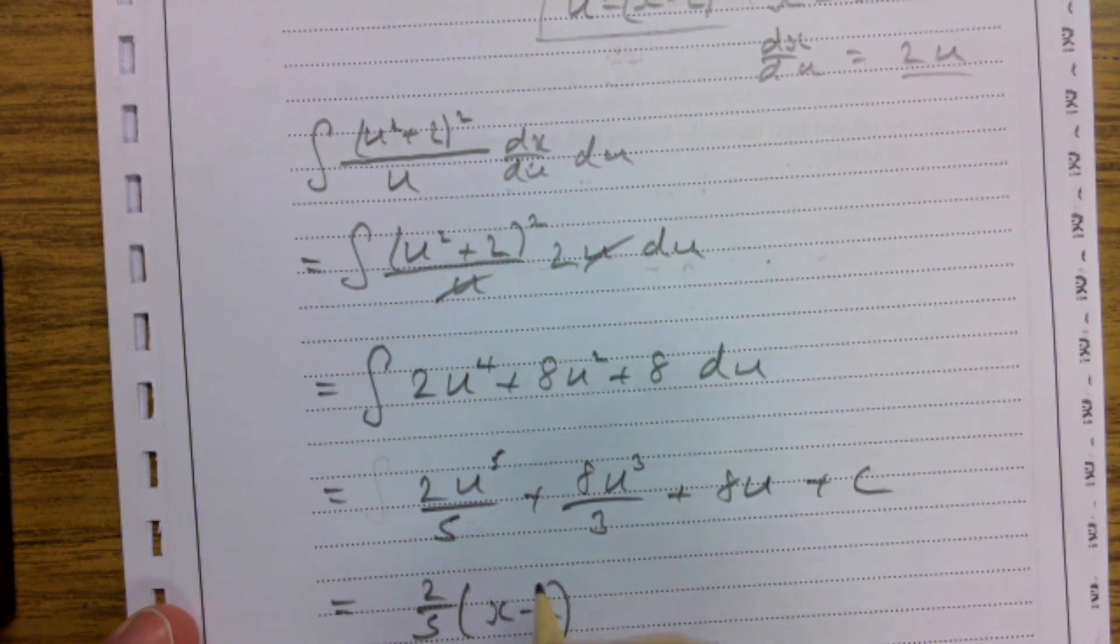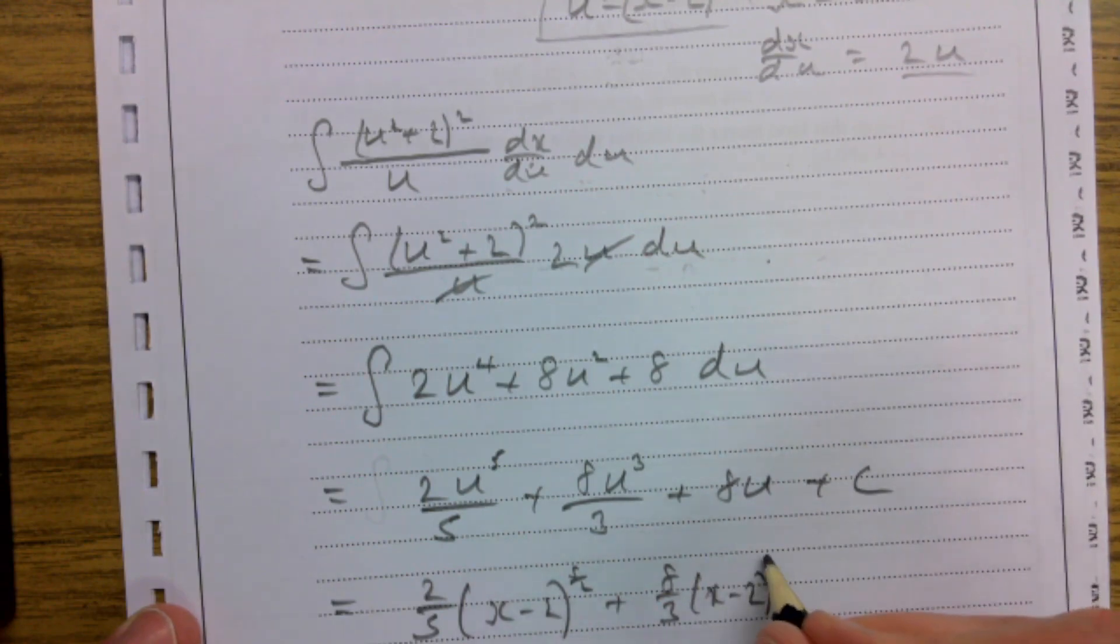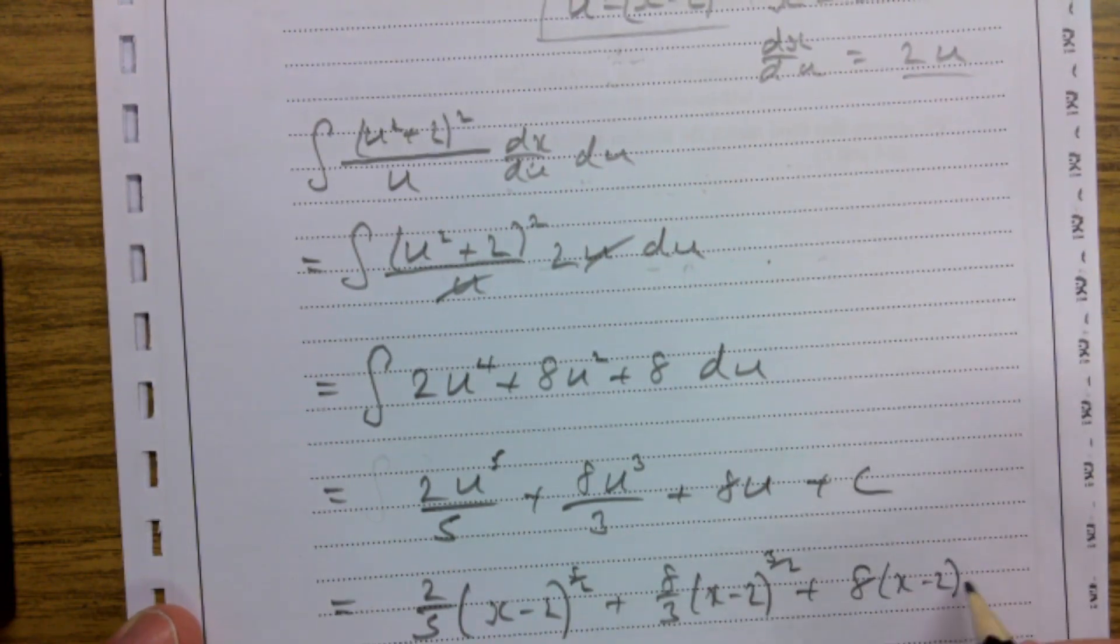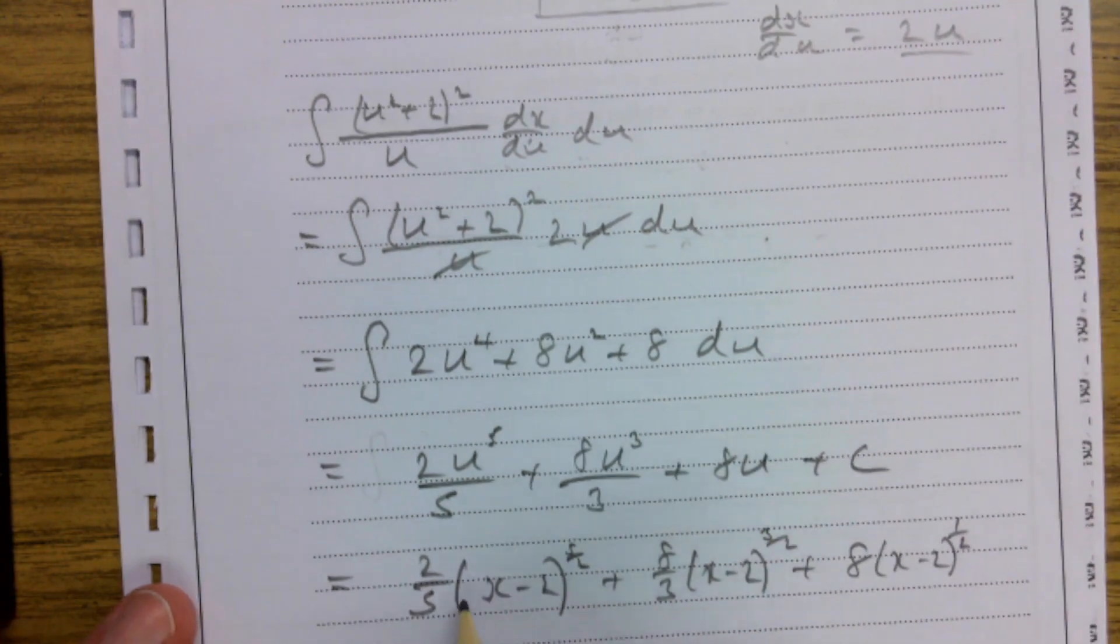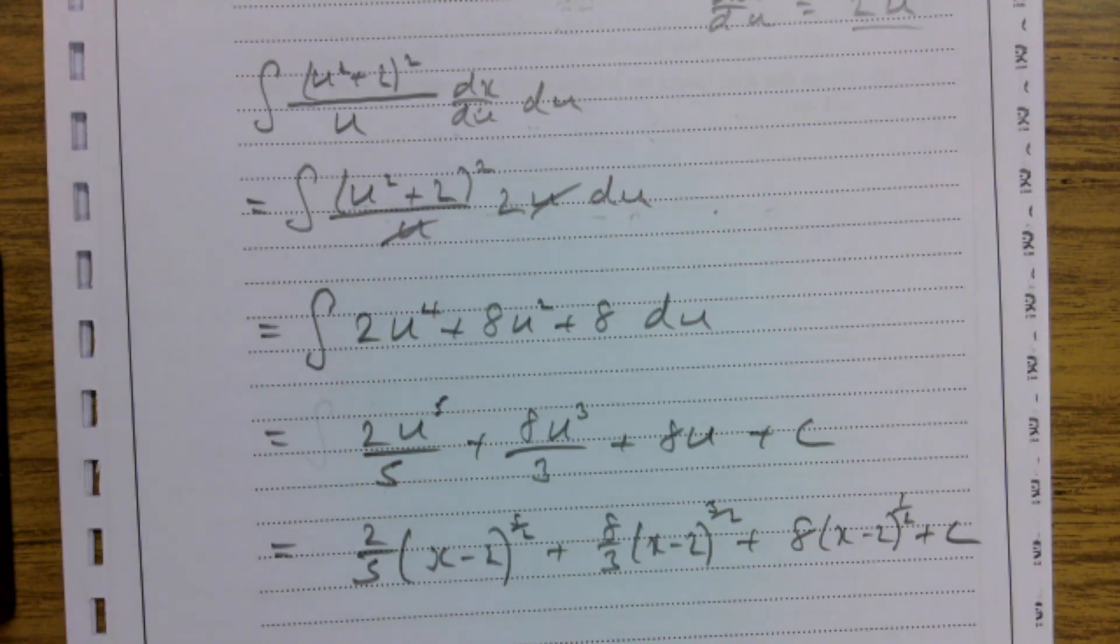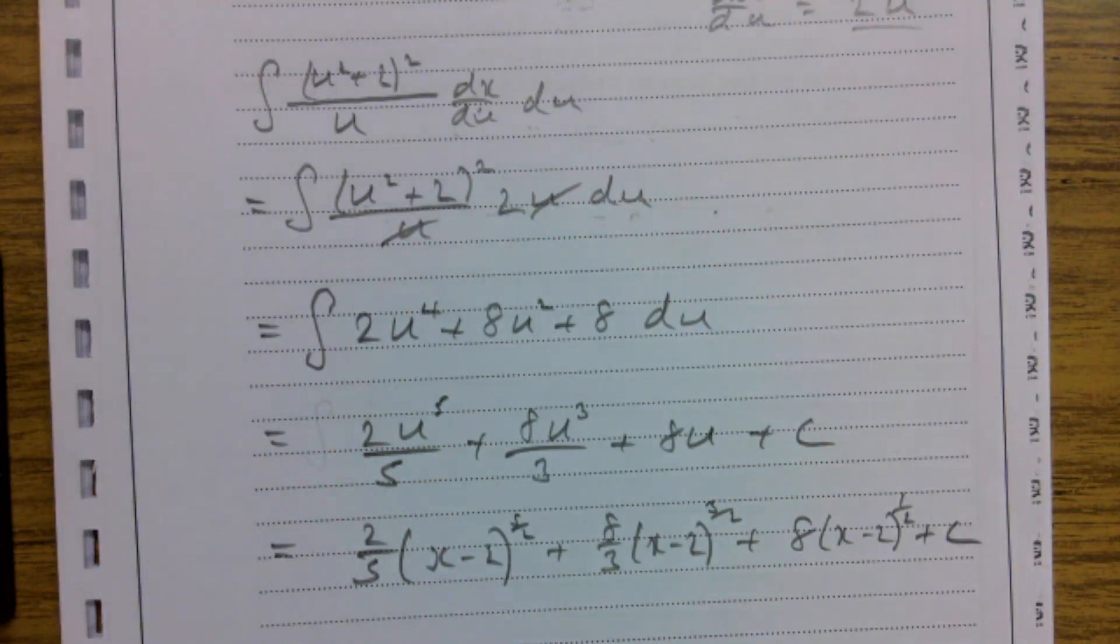Plus 8 over 3 x minus 2 to the power of 3 over 2, plus 8 x minus 2 to the power of 1 half. Now you can if you want have a square root sign in there and all to the power of 5 and so on. Either of those is fine. And remember then your plus c at the end.